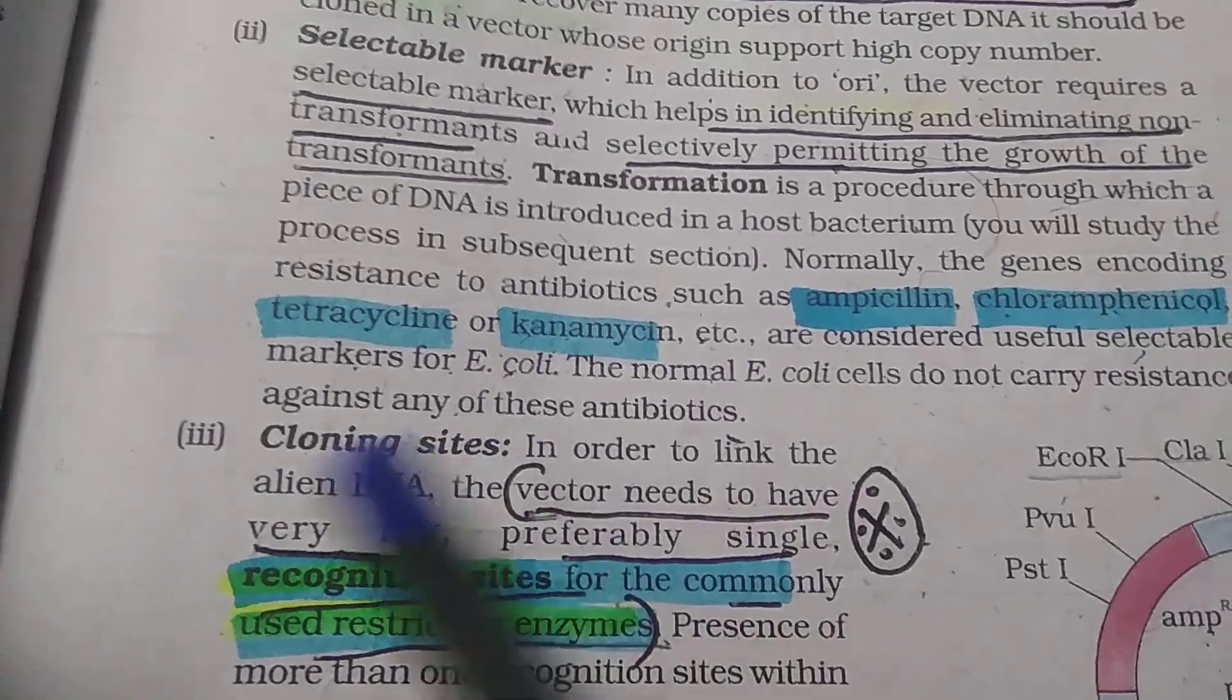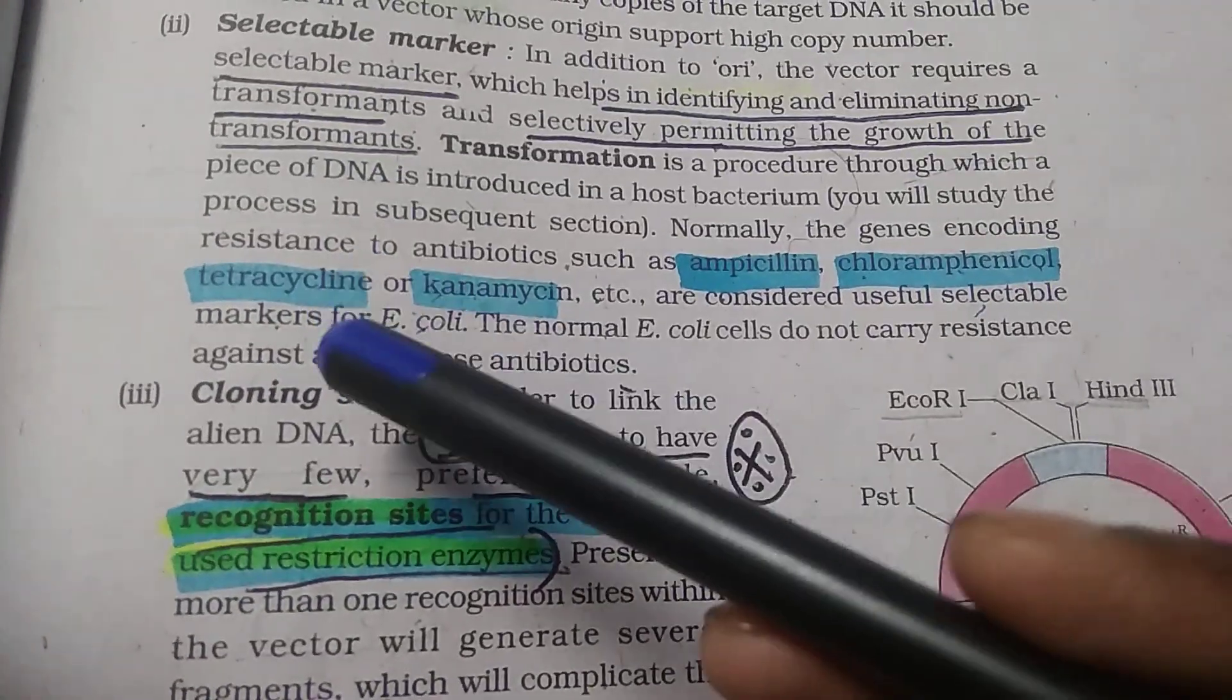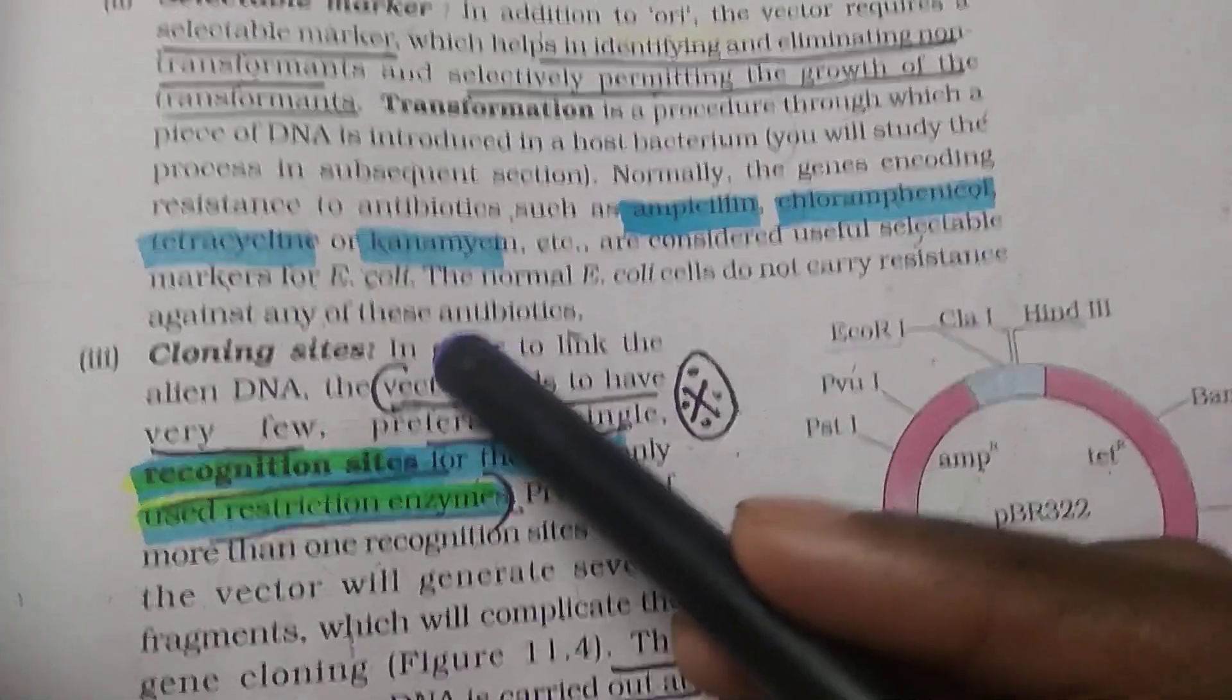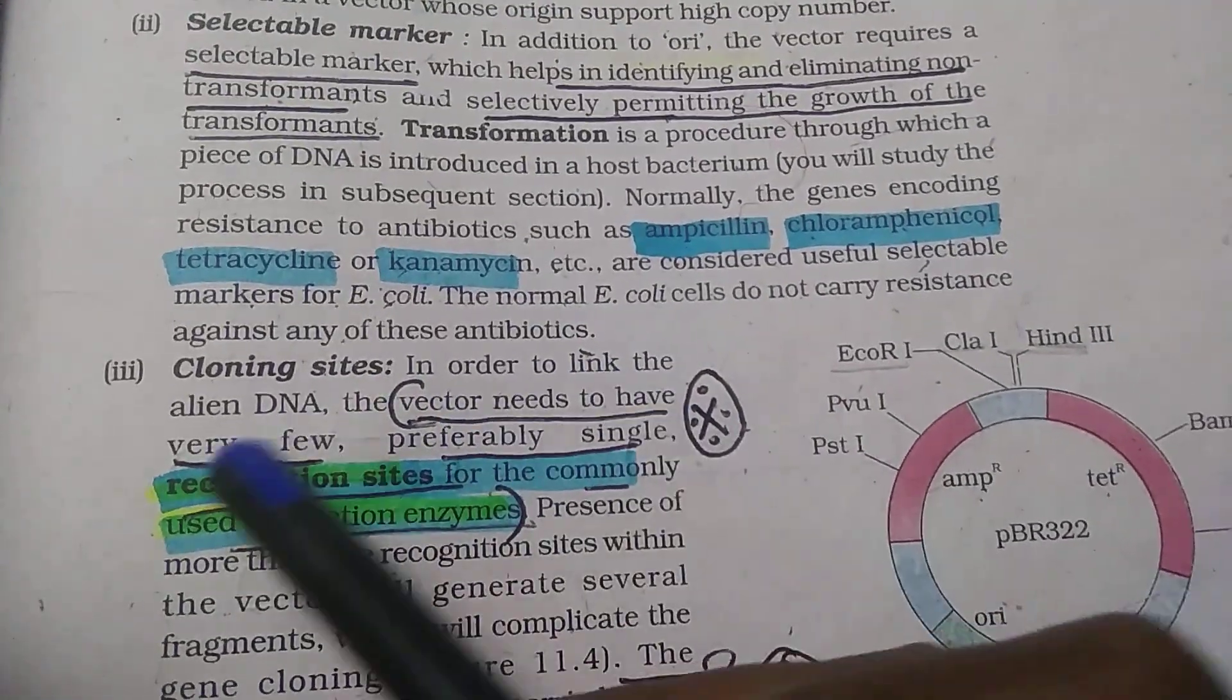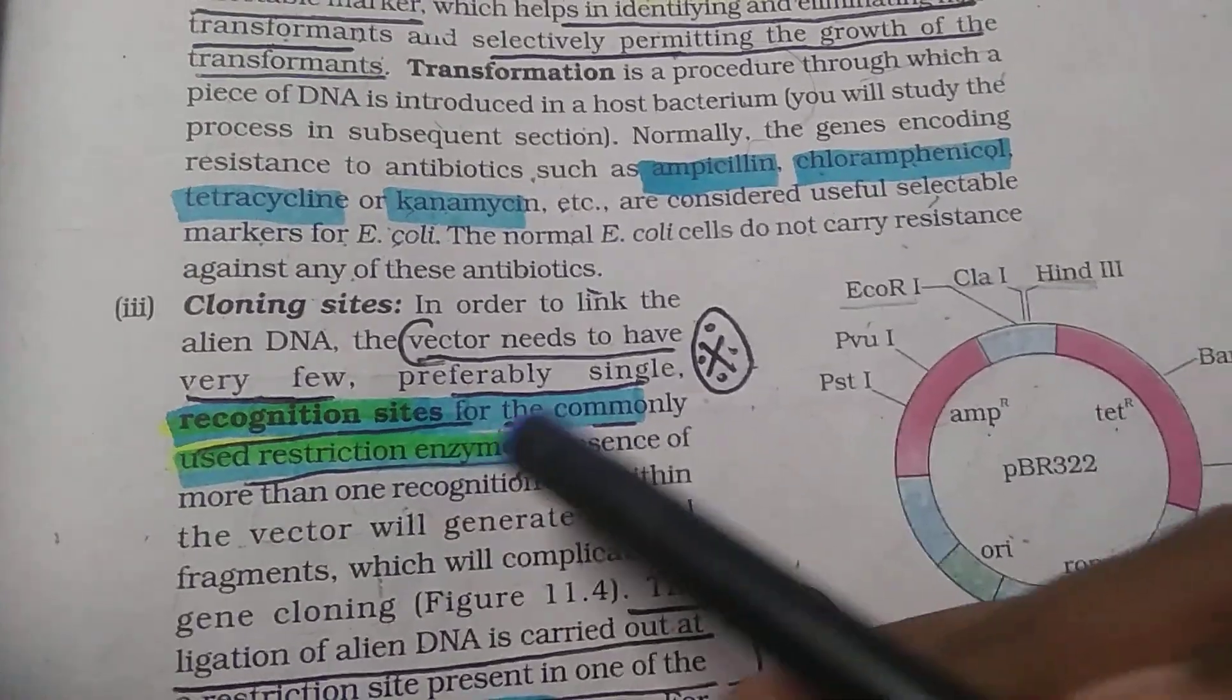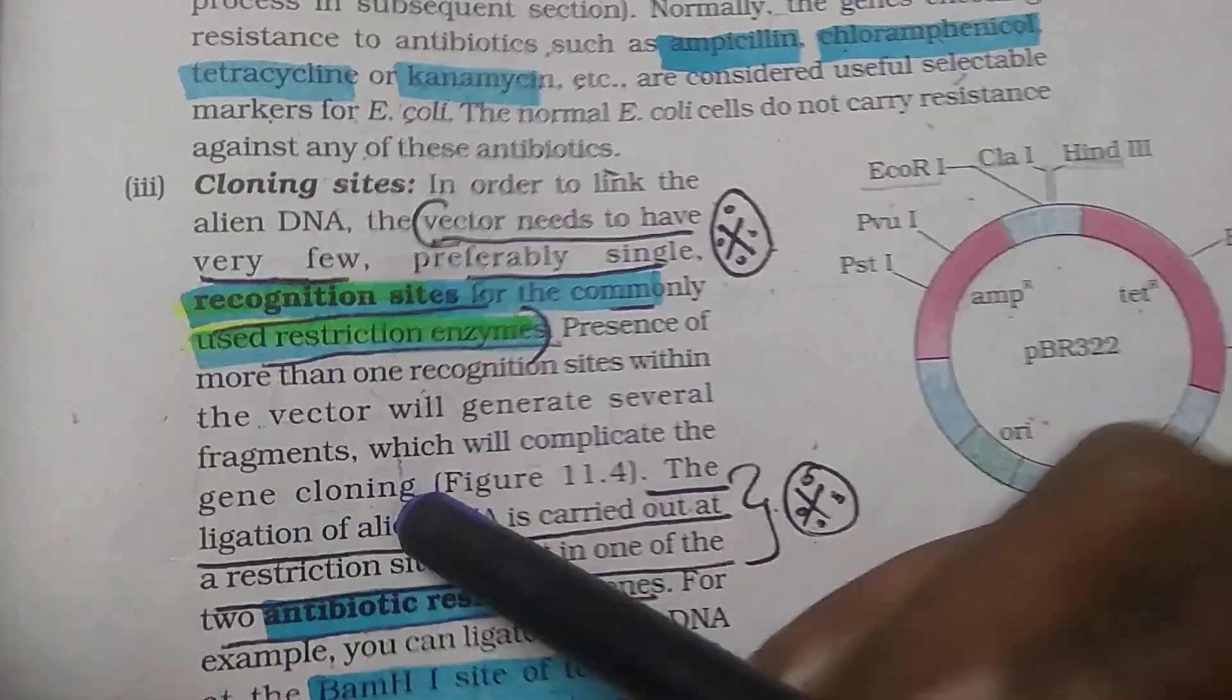We'll discuss the cloning sites topic. In order to link DNA, the vector needs to have very few, preferably single recognition sites for commonly used restriction enzymes. The presence of more than one recognition site within vectors will generate several fragments which complicate the cloning.